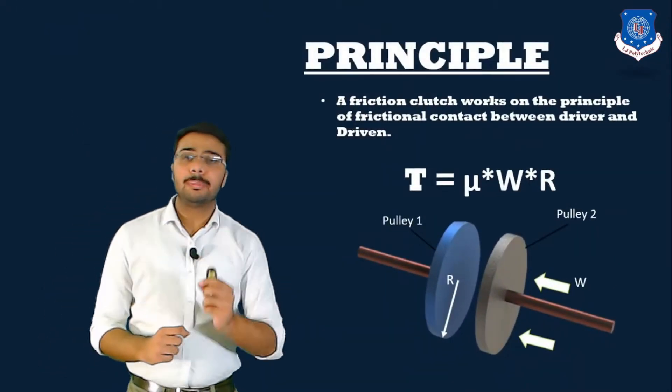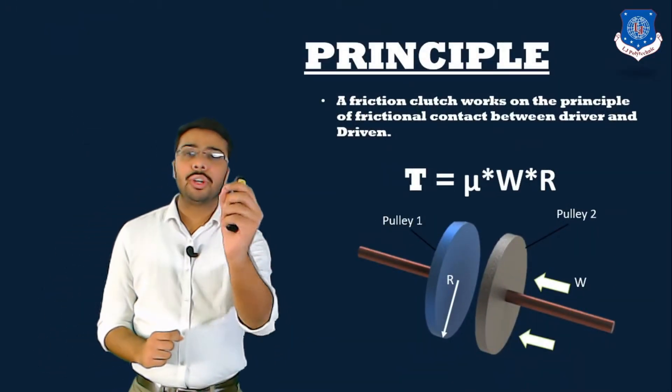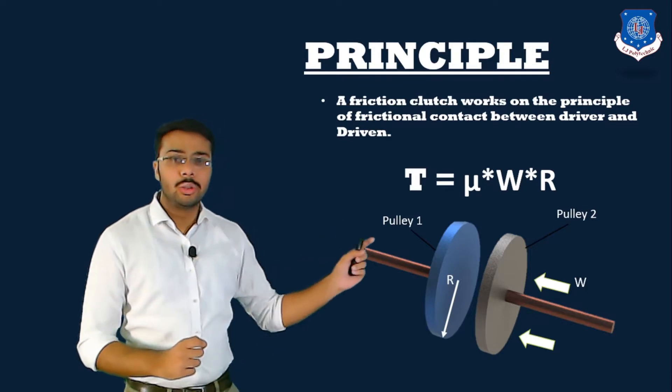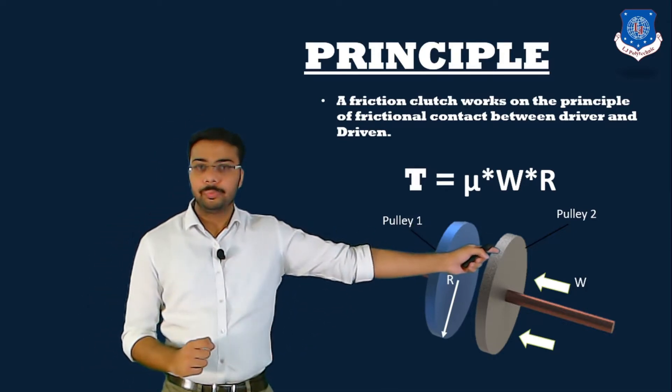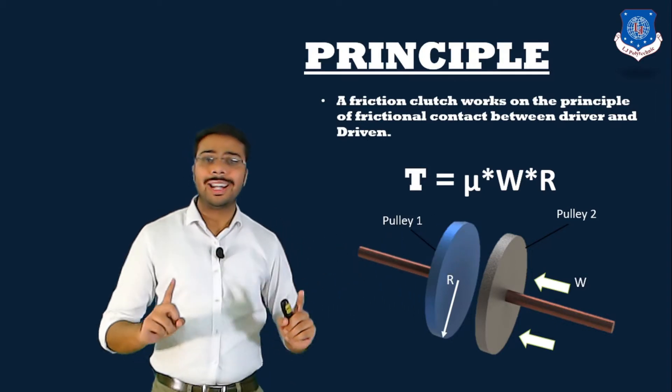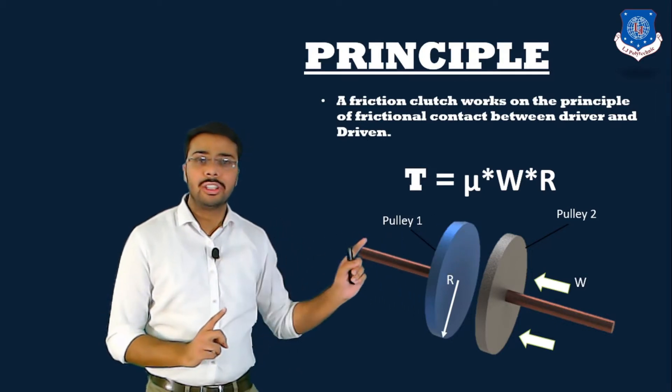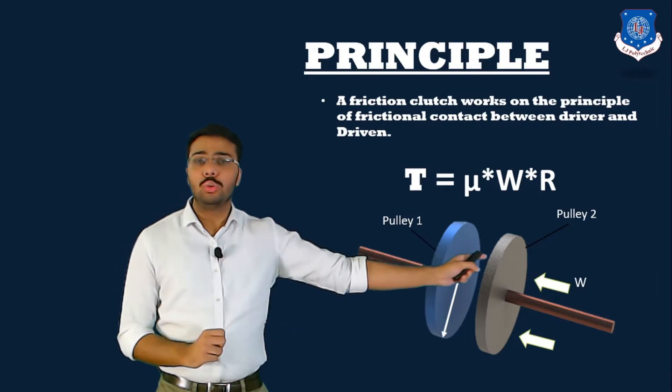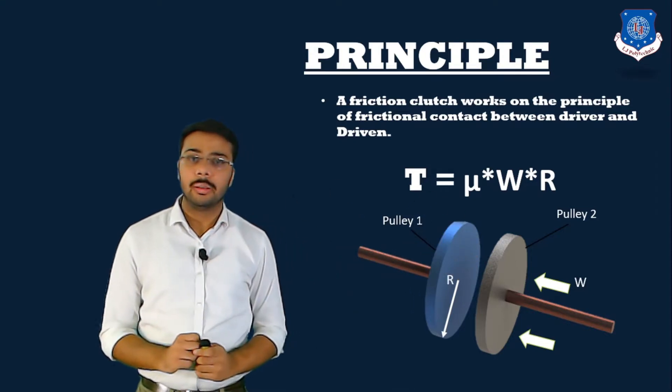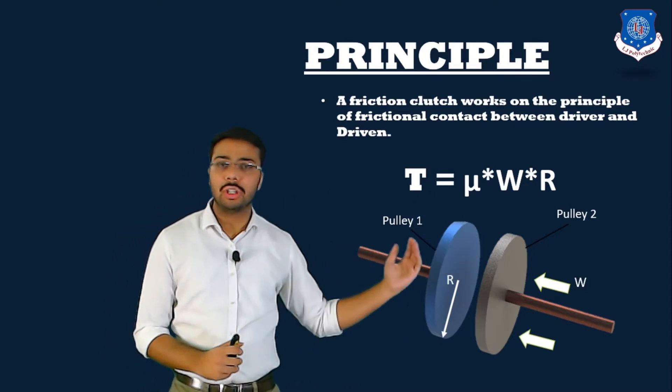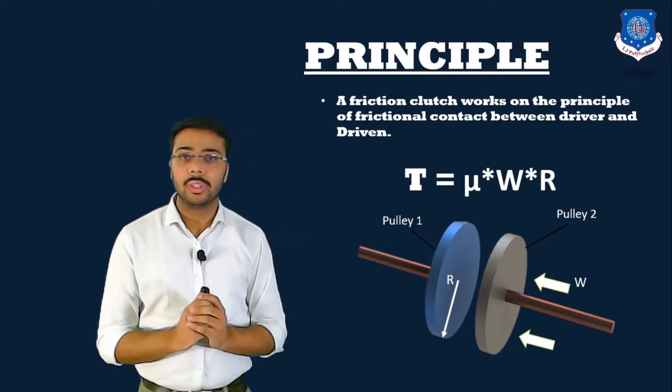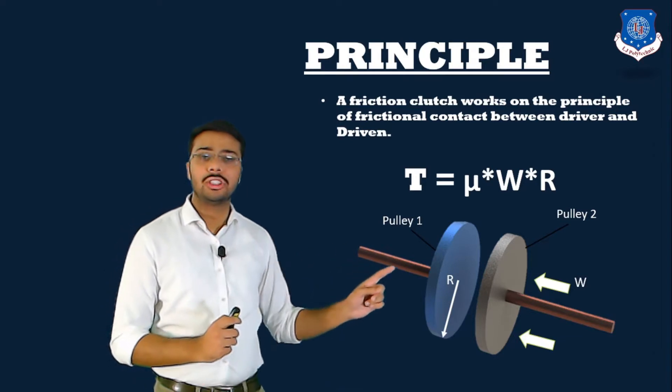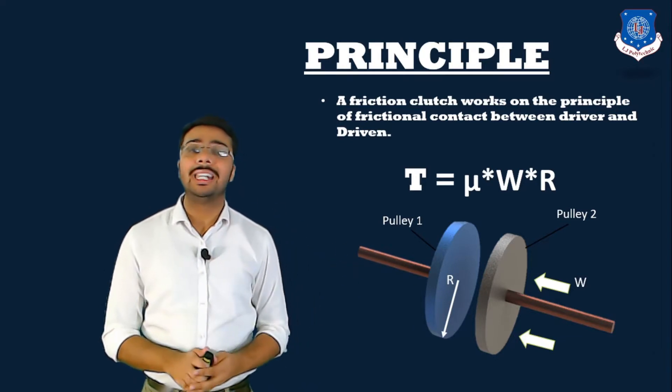Well, the principle of clutch is basically on frictional contact. Here you can see that there are two shafts and two pulleys, Pulley 1 and Pulley 2, and they are not connected with each other. Now if I rotate the shaft on Pulley 1, the Pulley 2 will not rotate automatically. But if I provide some pressure from Pulley 2 and make it come in contact with Pulley 1, and then if I rotate the shaft, Pulley 2 will automatically rotate.